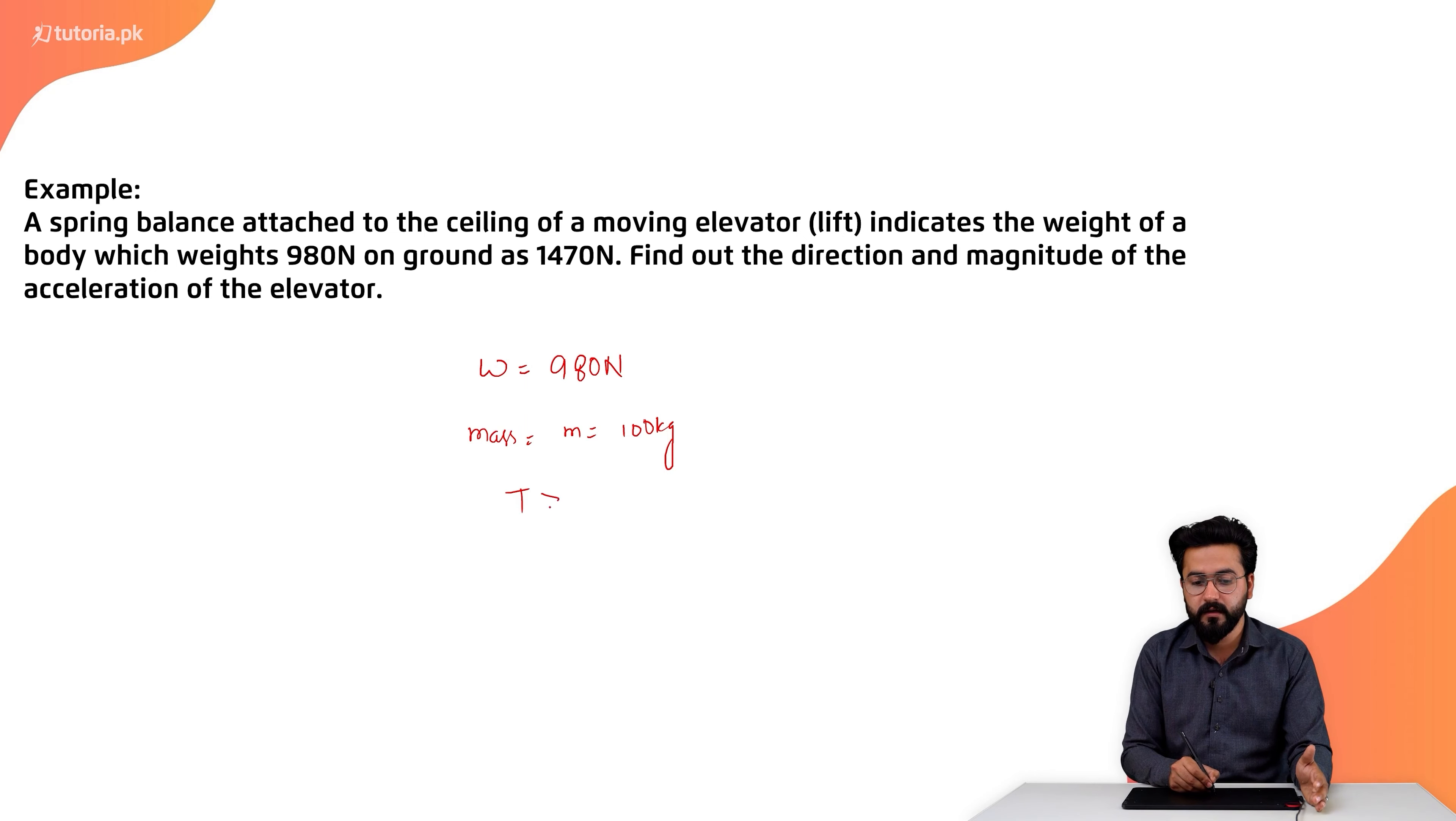What is the equation? T minus W is equal to ma. We will use this equation for tension. T value is 1470 minus 980 which is equal to mass, how much is the mass? 100 kg. We have to find the acceleration.